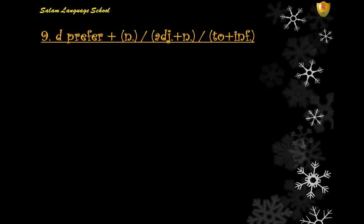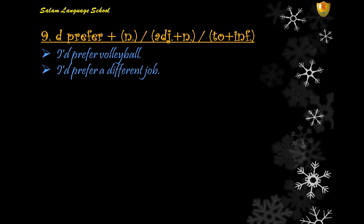Number nine: 'would prefer' can be followed by a noun, an adjective plus a noun, or 'to infinitive'. For example: 'I would prefer volleyball' — noun. 'I would prefer a different job' — adjective plus noun. 'I prefer to leave early' — to infinitive.